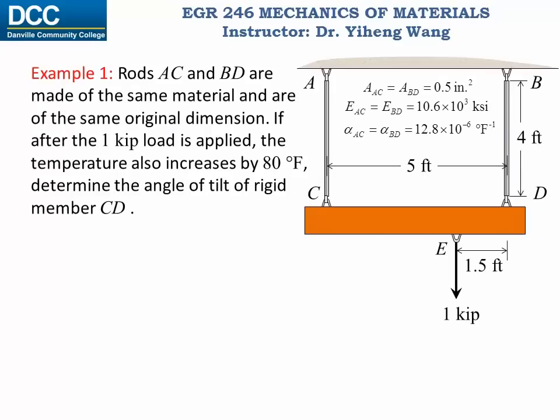Let's look at this example. There are two rods AC and BD that are made of the same material and are of the same original dimension. Their length, cross-sectional area, Young's modulus, and the linear coefficient of thermal stress alpha are all given. They are connected to a rigid body CD, which is subjected to an applied force of 1 kilopound. Also, for the entire system the temperature has increased by 80 degrees Fahrenheit.